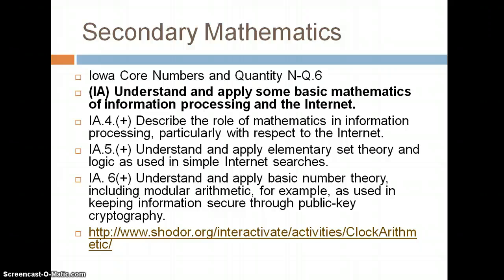Actually, the Iowa Core has a standard in the numbers and quantities domain that talks about information processing in the internet. Specifically, number 6.1 talks about basic number theory, modular arithmetic, that's used for the public key cryptography.